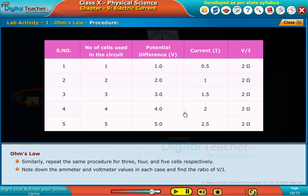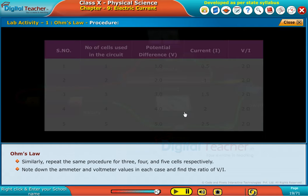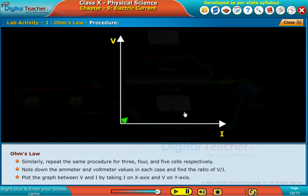Note down the ammeter and voltmeter values in each case and find the ratio of V by I. Plot the graph between V and I by taking I on x-axis and V on y-axis.